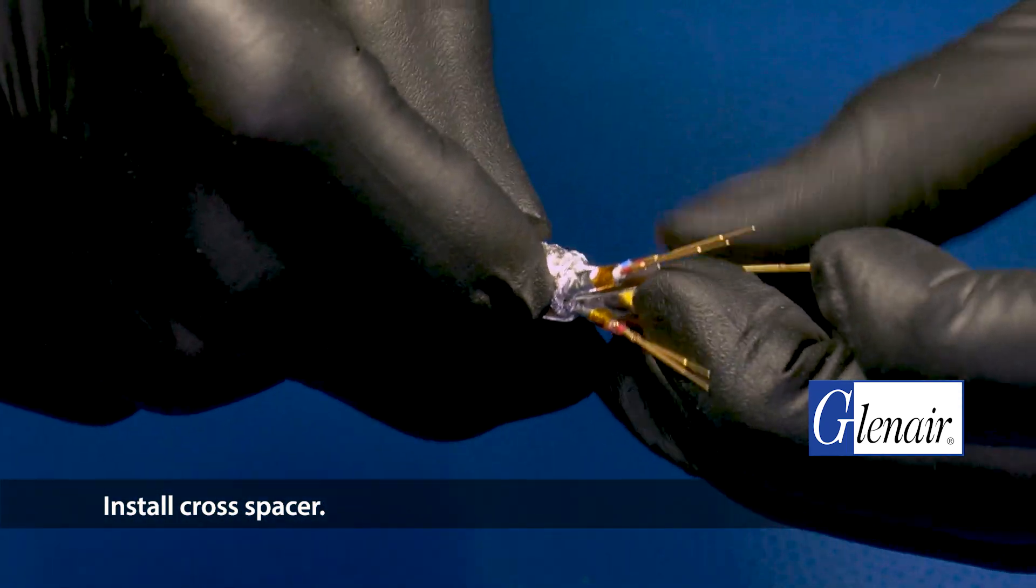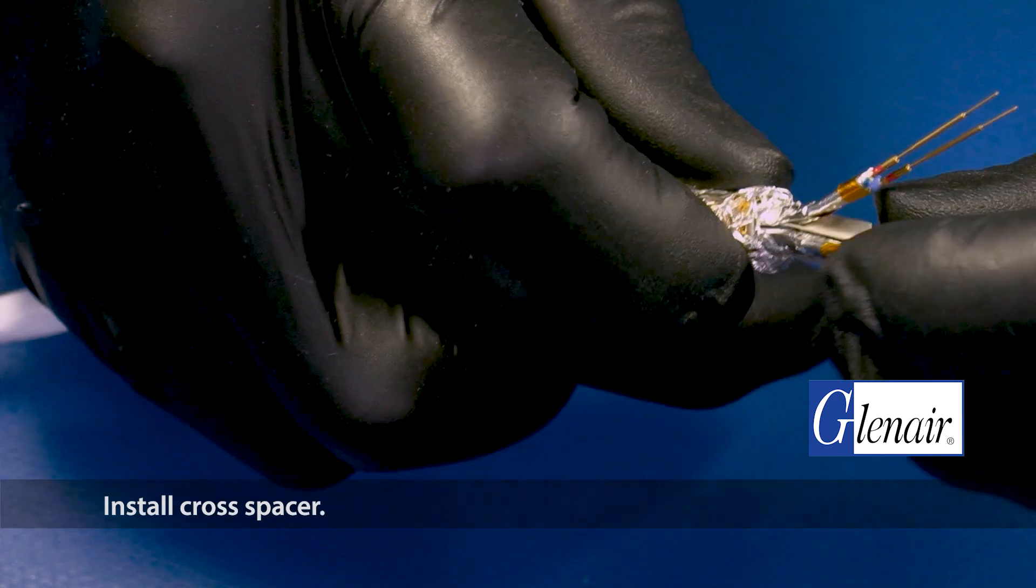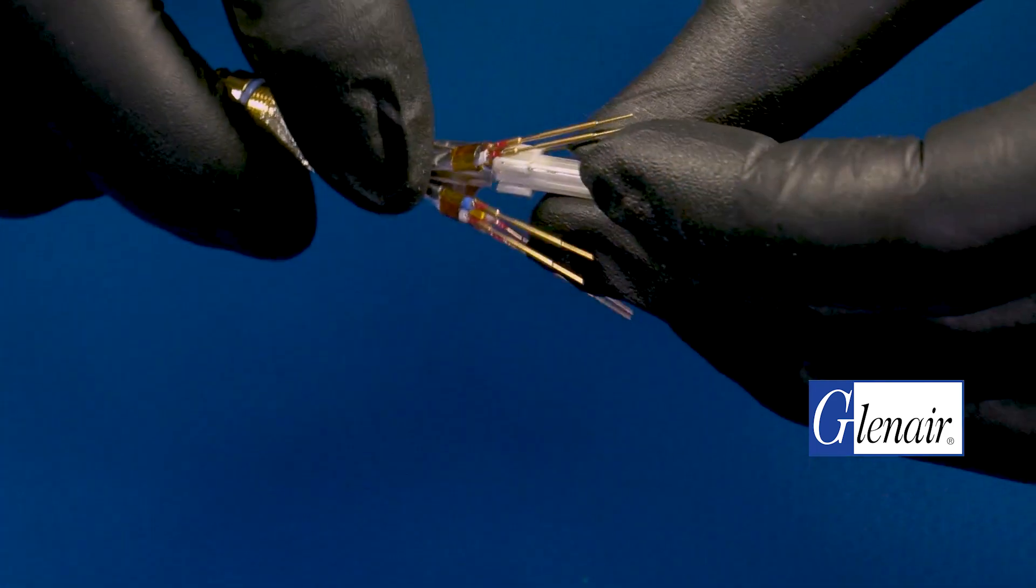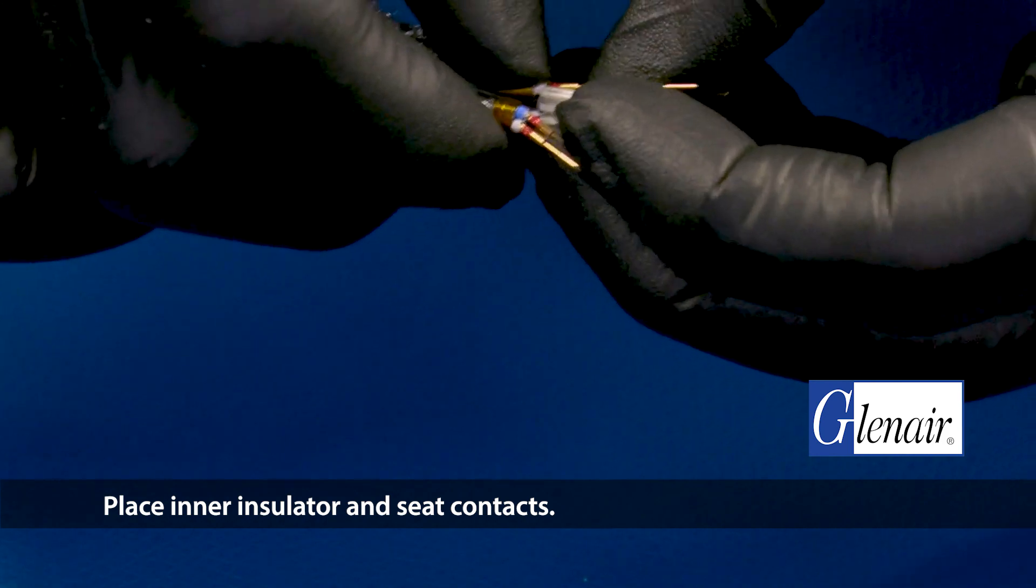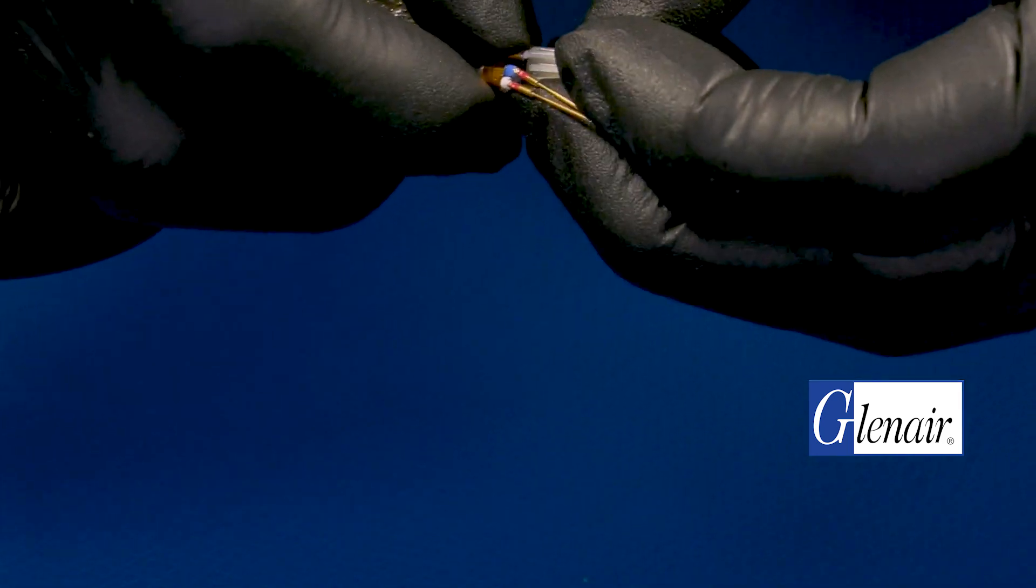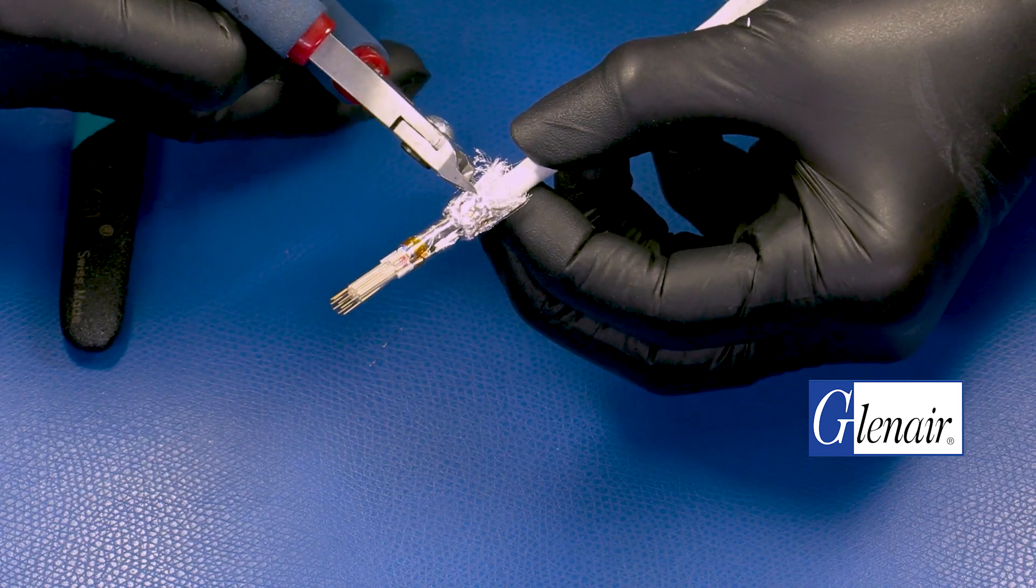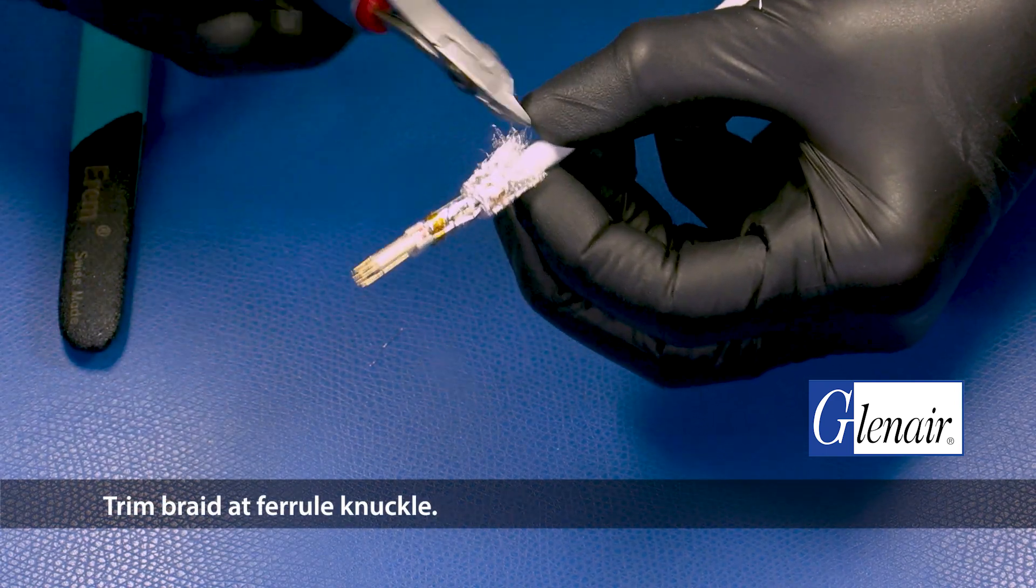Install cross spacer. Place inner insulator and seat contacts. Trim braid at ferrule knuckle.